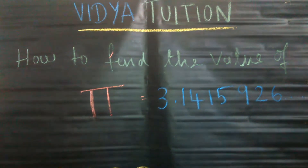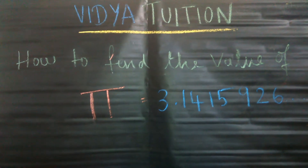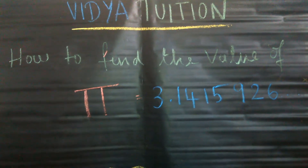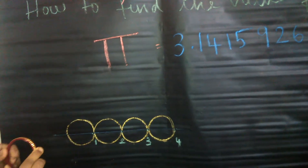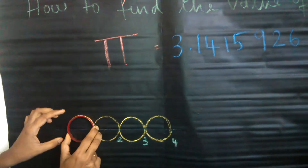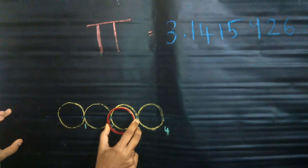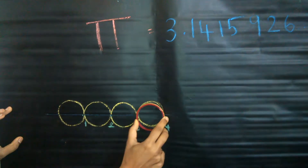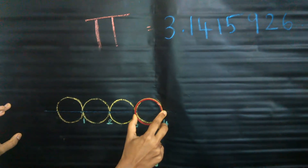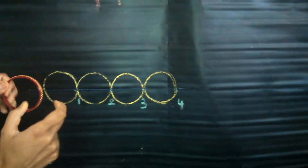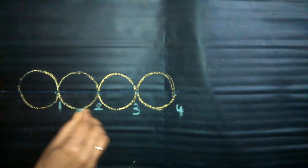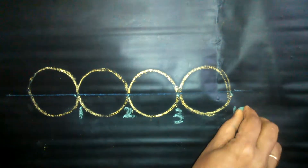For this experiment I am going to take my small bangle. Here it is. Now I am going to draw 4 circles like this. The circumference of the circle, as you know. So 4 circles: this is 1, this is 2, this is the 3rd one, this is the 4th one.